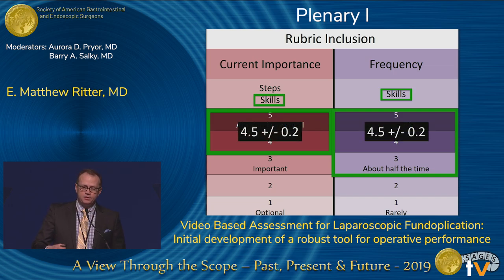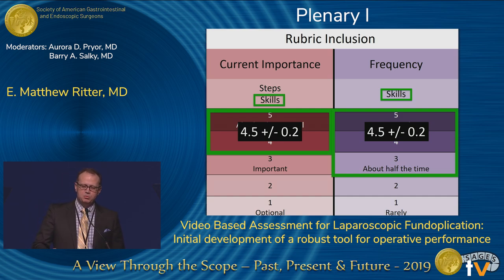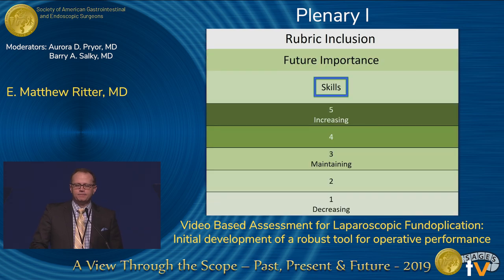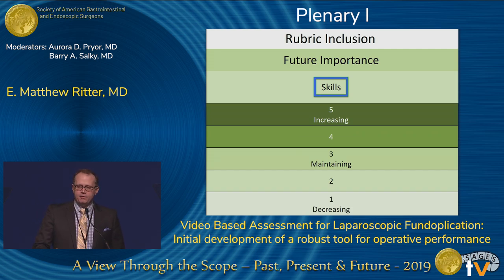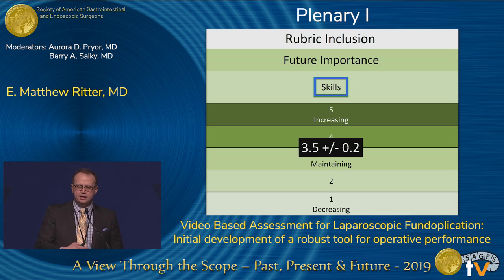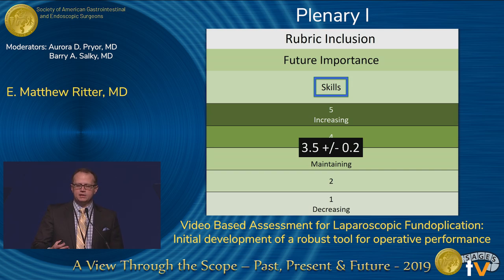Interestingly, those items came from different data sets but ended up with the same mean and standard deviation. We did not use future importance as a criterion for the final rubric; however, everything from a skill standpoint that made the final rubric was thought to at least maintain its importance or slightly increase over time. Based on the large sample, we don't anticipate a dramatic change in what this tool will measure in the near future.